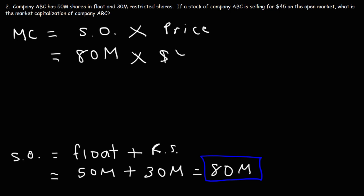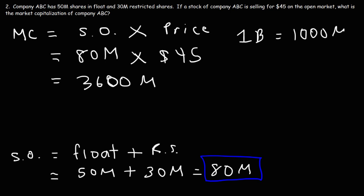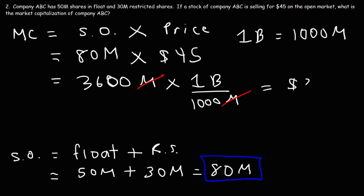80 times 45 equals 3,600. To convert million to billion, recall that 1 billion equals a thousand times a million, so 3,600 million is 3.6 billion — just divide by 1,000 and the unit M cancels. So this company is valued at 3.6 billion dollars. The market cap tells you the total value of the company's shares, including both restricted shares and shares available for trading.